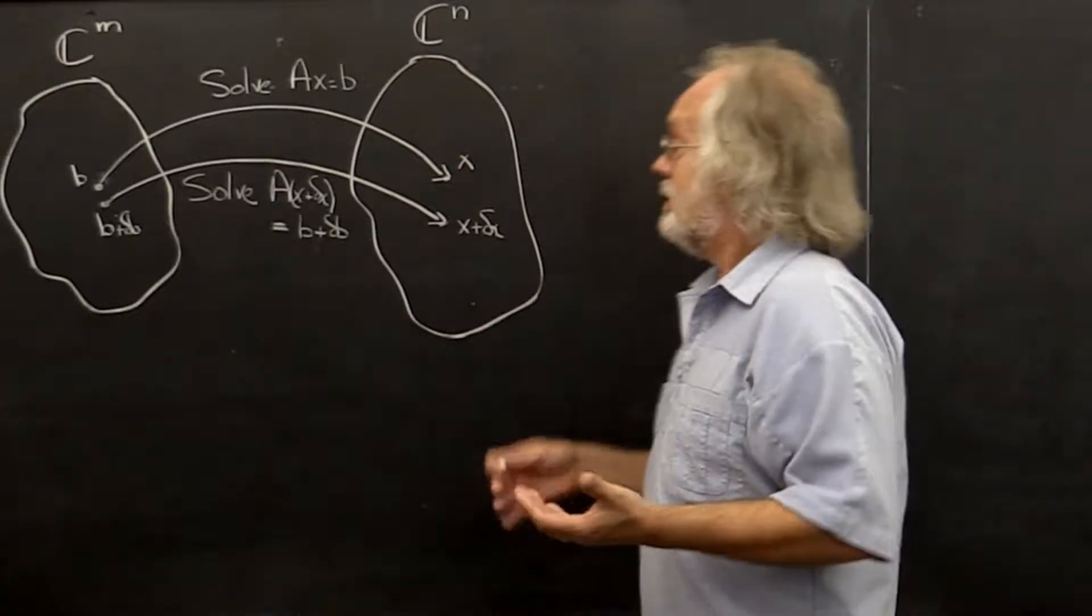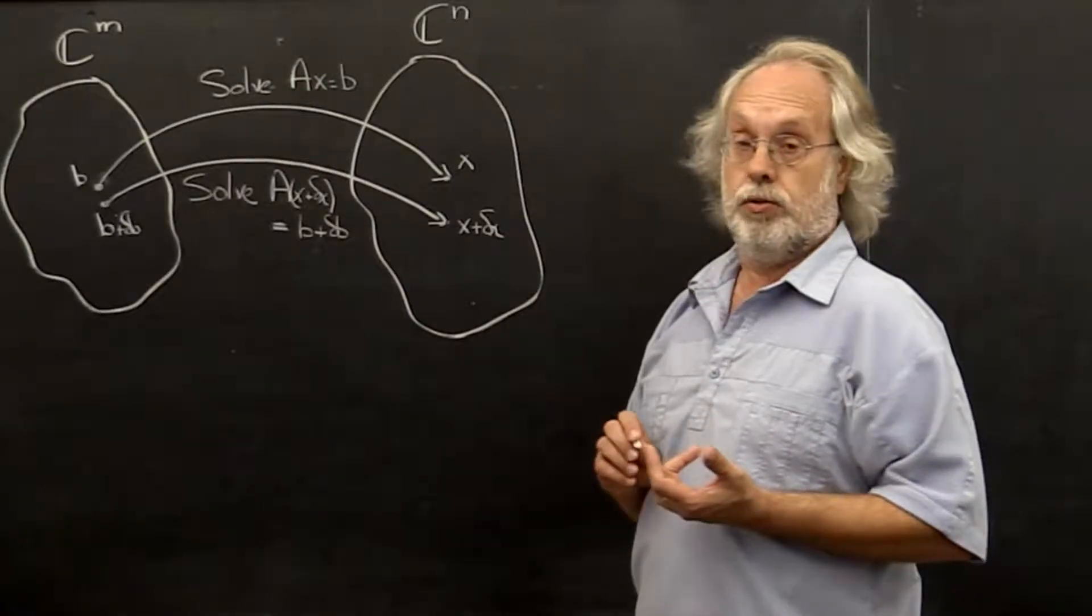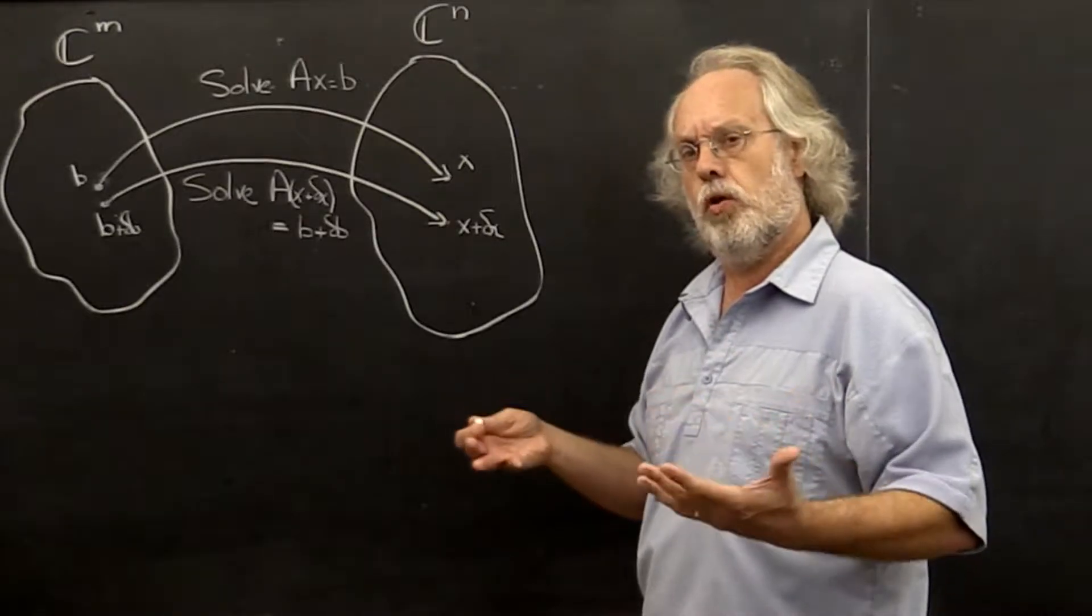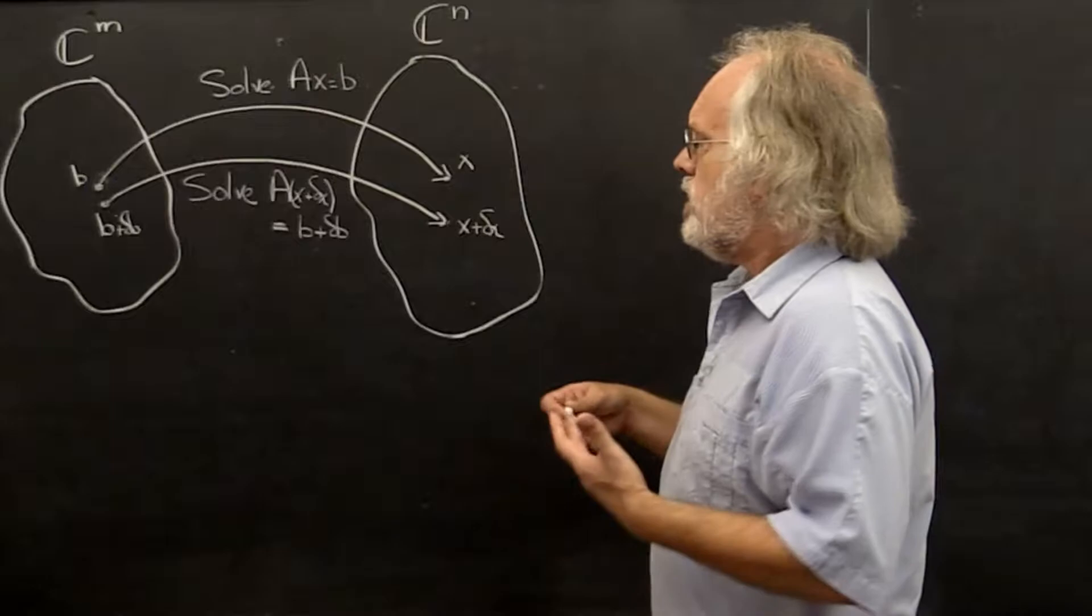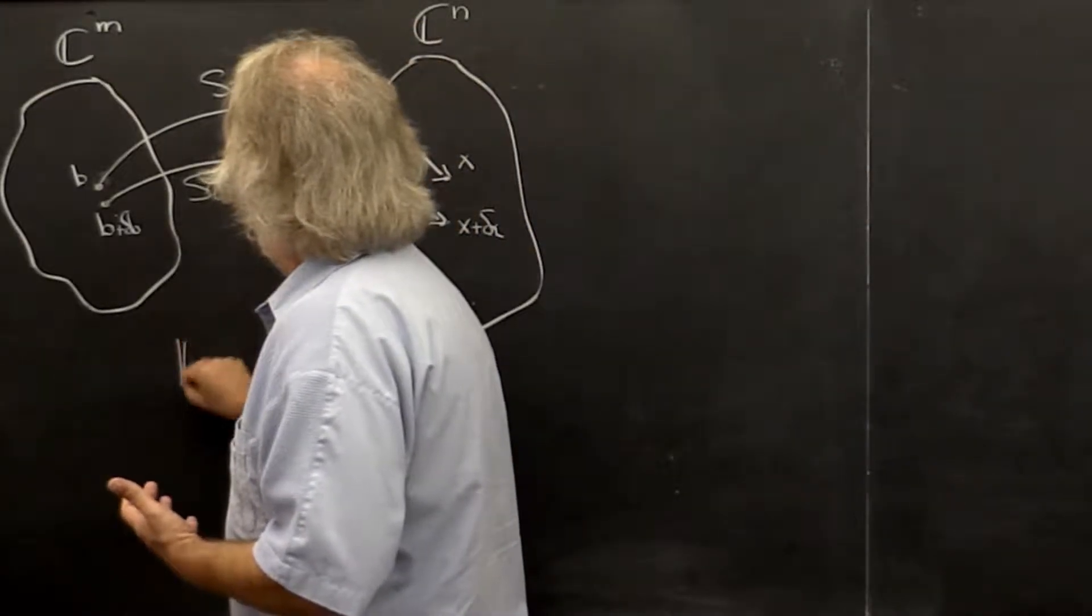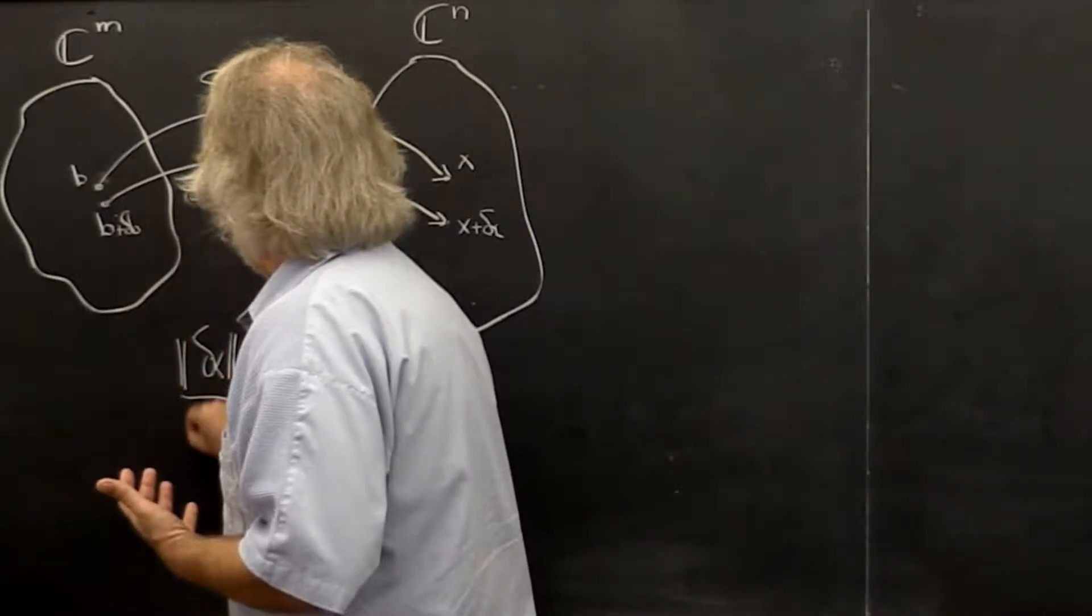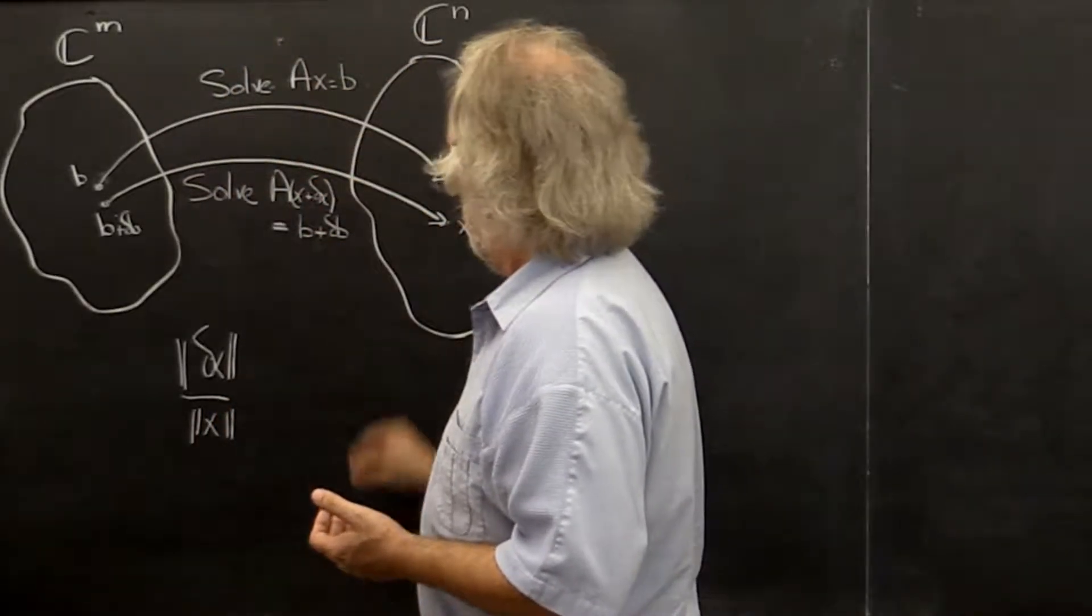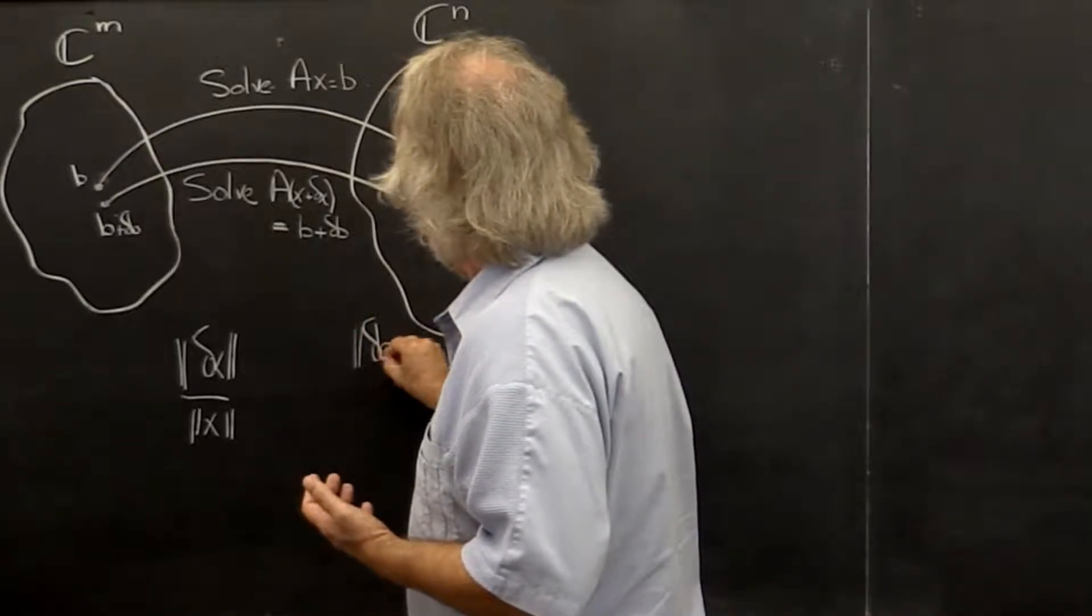Obviously what you would like is for there to be a small error in the solution as well. You know how to measure small now—we use vector norms. But really we're interested in relative error. We're interested in the change in x relative to x that results when you do these two computations, and you want to compare it to the relative error in B.